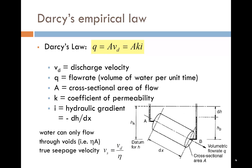Q over A can also be written as the discharge velocity V subscript d, but this is not particularly meaningful as water can only flow through the void space. The true seepage velocity V subscript s is Vd divided by the porosity, n.